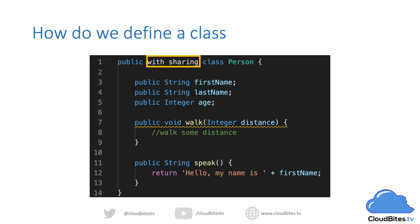We then define the class either with or without sharing. You should almost always declare your class as 'with sharing'. With sharing classes mean that sharing rules are applied on any queries or searches that are done across the database, ensuring that if a user is searching for some data they only retrieve data they can see. We then finish the definition with the words 'class Person' — the keyword class says this is a class we're defining, and Person is the name of the class.